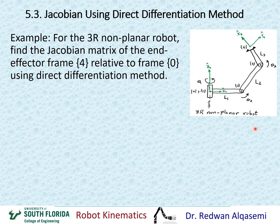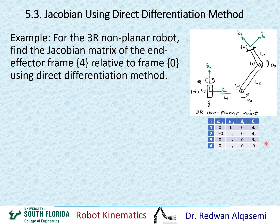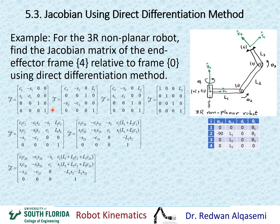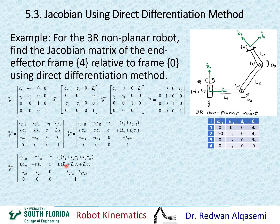We first do the forward kinematics and find the DH parameters. From the DH parameters, we find transformation matrices T01, T12, T23, and T34. Multiplying them: T01 × T12 = T02, T02 × T23 = T03, and T03 × T34 = T04. We list these intermediate results because they will be needed for the angular velocity Jacobian. For direct differentiation, T04 is the matrix we will use.